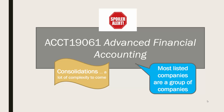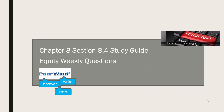There is a lot of complexity to doing this and you will study this in detail in ACT 19061, Advanced Financial Accounting. For further information on investments in other companies, go back to Chapter 8, Section 8.4 in the study guide and also review the equity weekly questions. Also answer, write and rate questions on equity in PUIs.